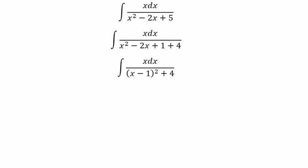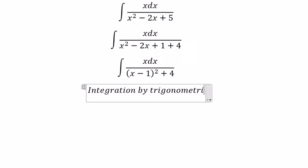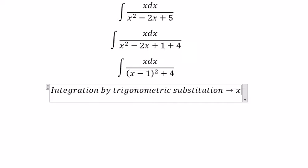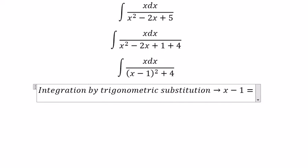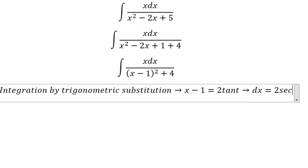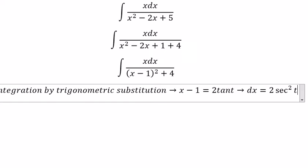So now we can use integration by trigonometric substitution. We put x minus 1 equal to 2 tan t. Then dx, you get 2 sec squared t dt.